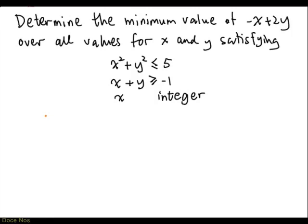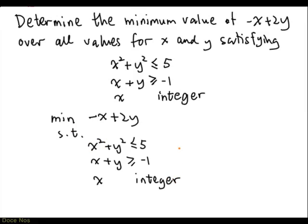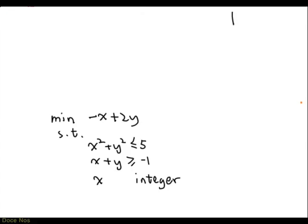There is a simpler way to write down this problem. We're going to write this in a different form without that many words. So we'll say min minus x plus 2y subject to these constraints. This is the form that most optimization problems will appear in.